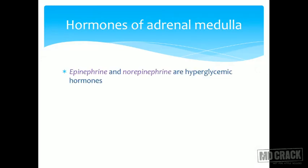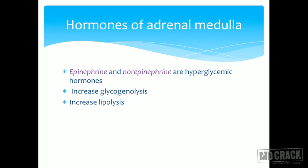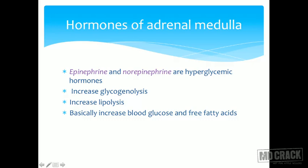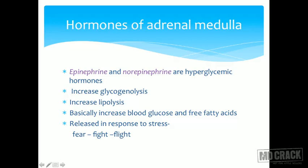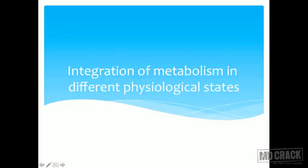Hormones of the adrenal medulla — epinephrine and norepinephrine — are also hyperglycemic hormones. Epinephrine acts on muscle rather than liver to increase glycogenolysis. They activate hormone-sensitive lipase, increasing lipolysis so that more lipids are converted to acetyl-CoA, raising blood glucose and free fatty acids. These hormones are released in response to stress — in a fear, flight, or fight response — to increase blood glucose and free fatty acids via glycogenolysis and lipolysis.